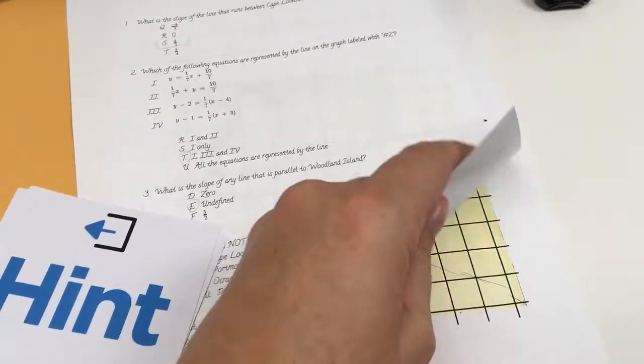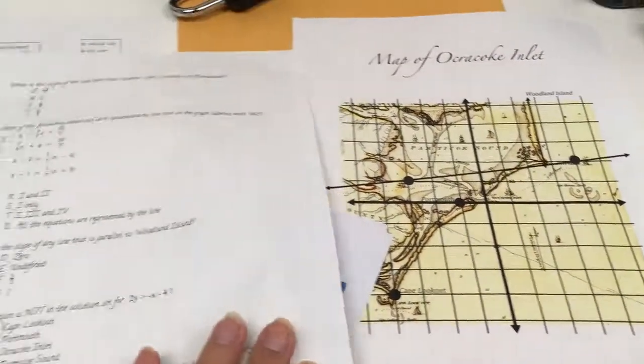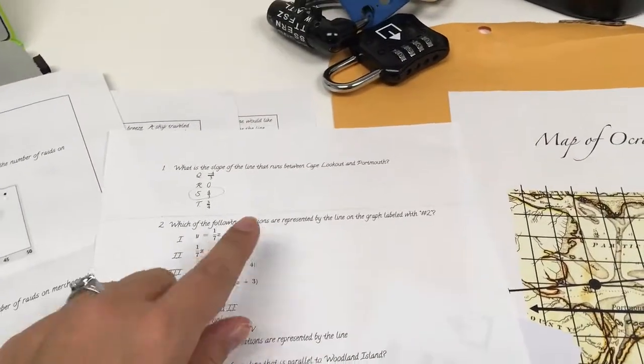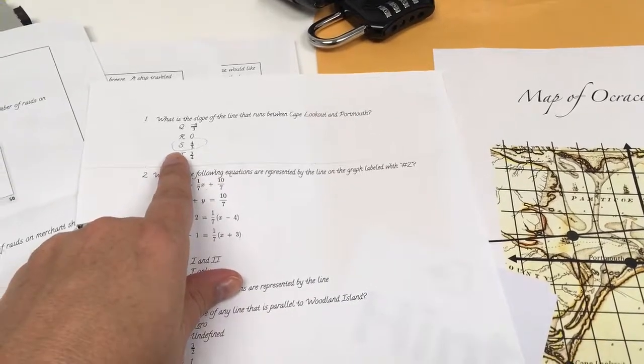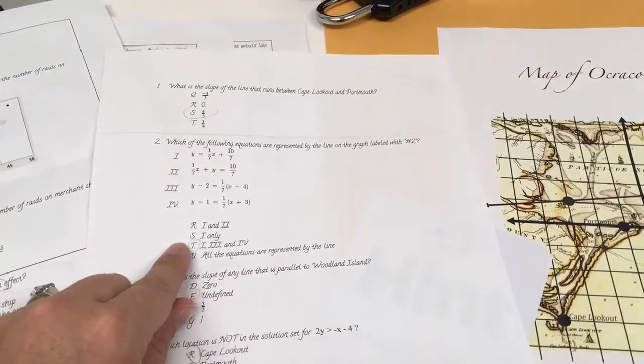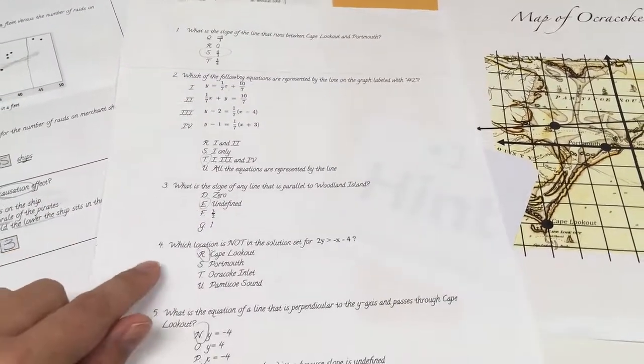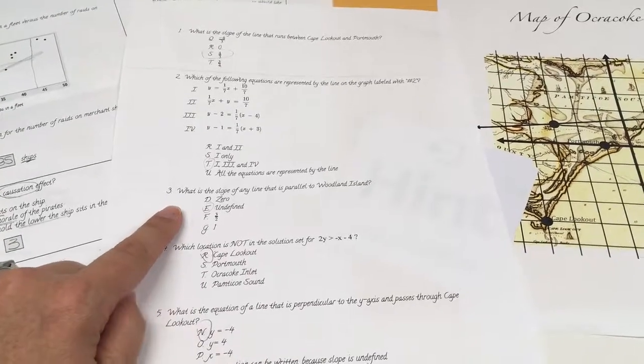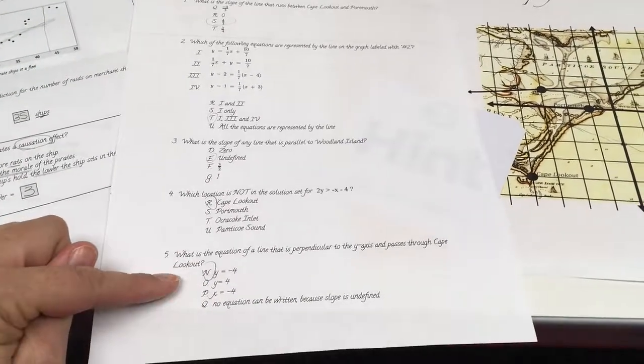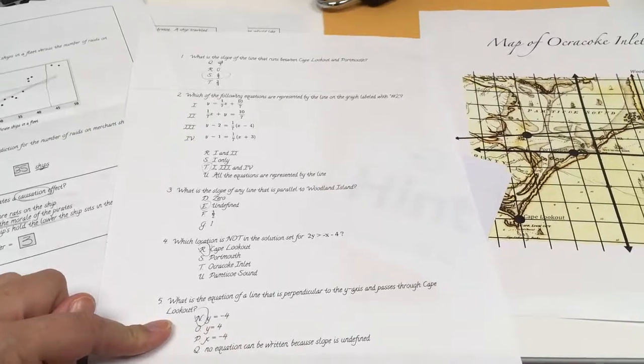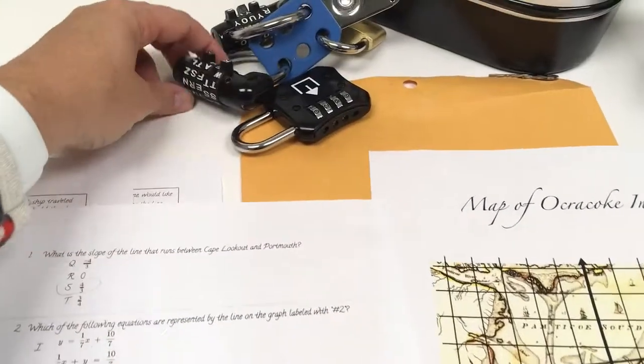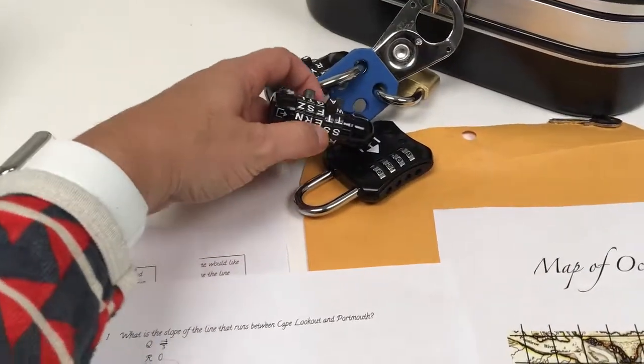For the map and the map questions the answers end up being 1 is S, 2 is T, 3 is E, 4 is R, and 5 is N spelling stern and that is your code to the word lock is stern.